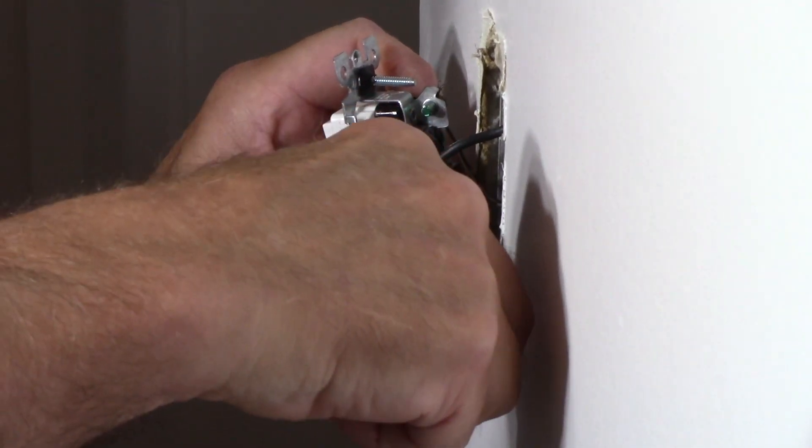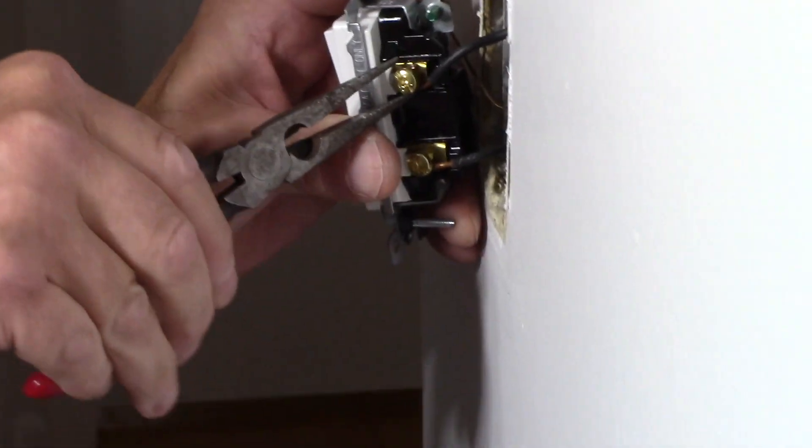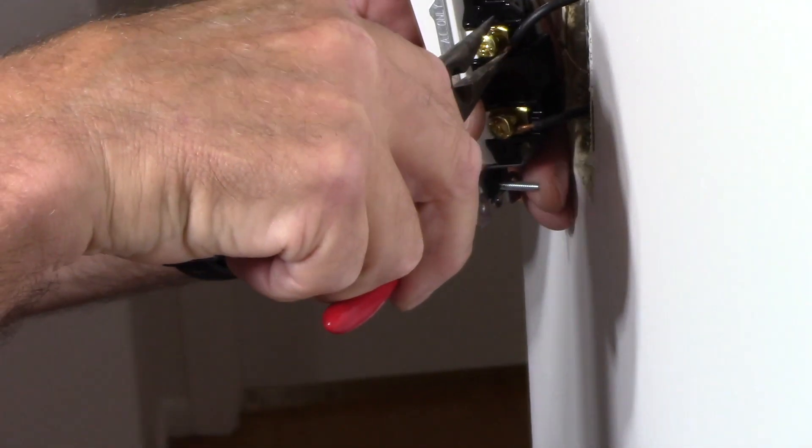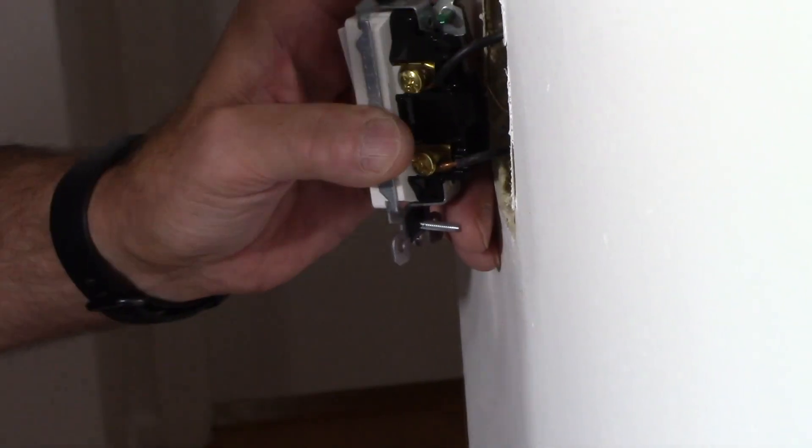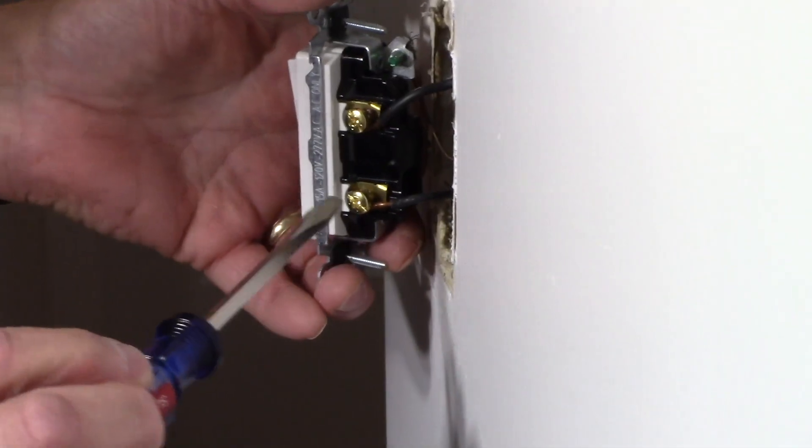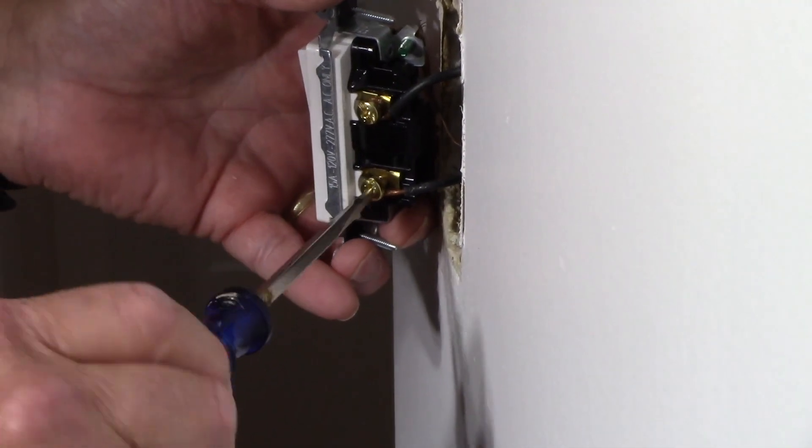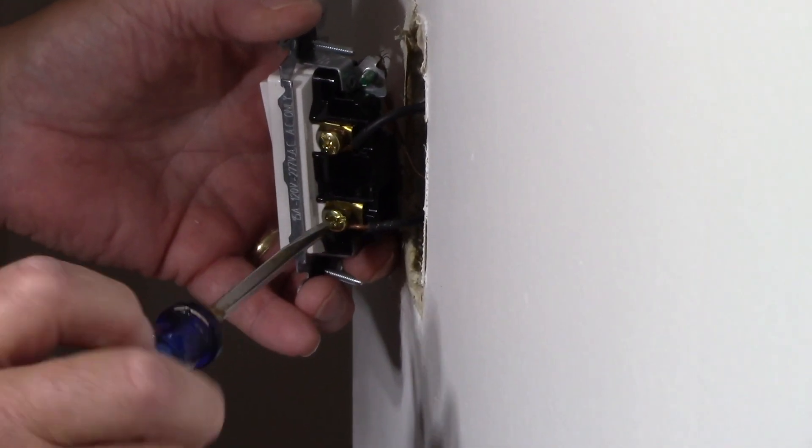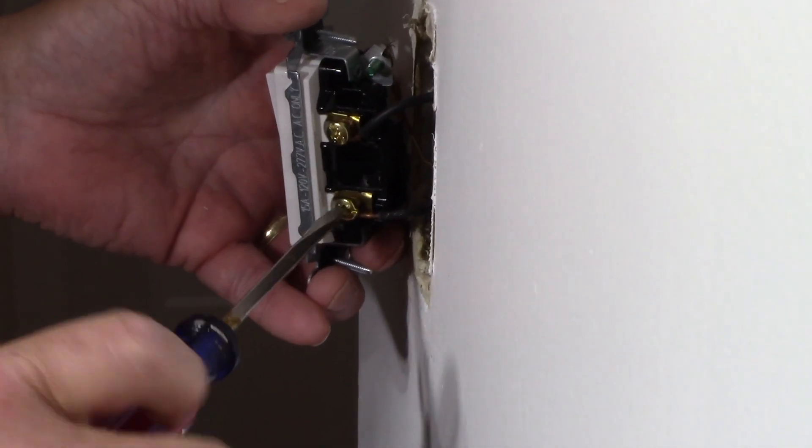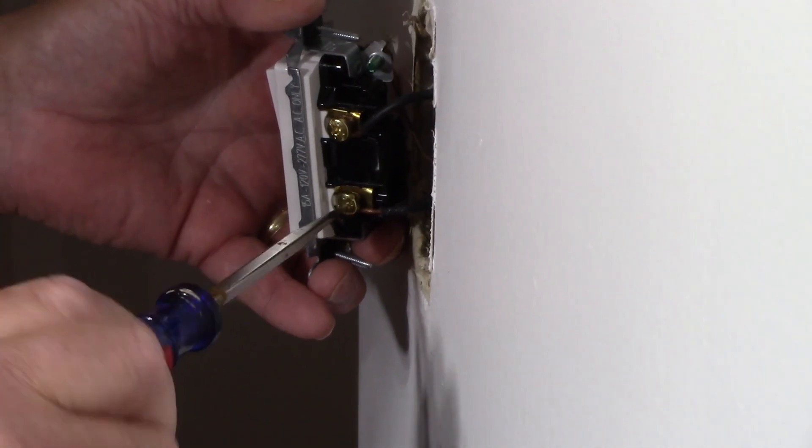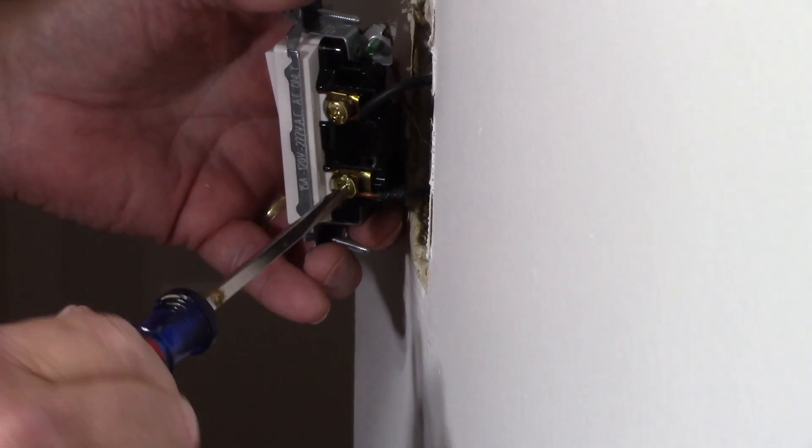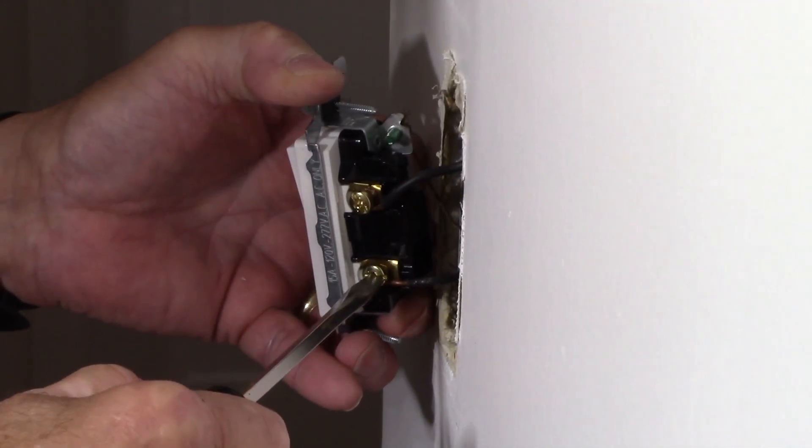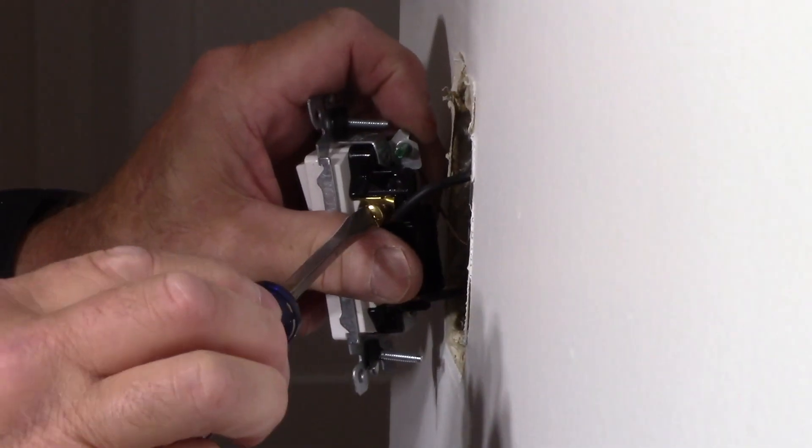And then we're going to crimp it again so that the wire is tighter just like that. Then we'll grab our screwdriver and we'll tighten down the screws. Nice and tight. Do the exact same thing on this one.